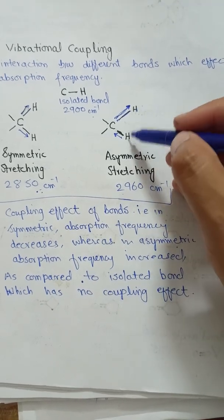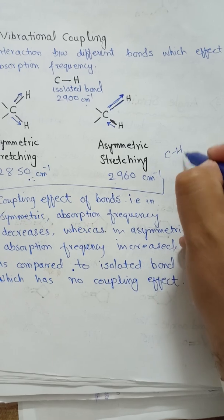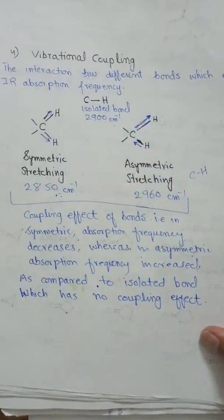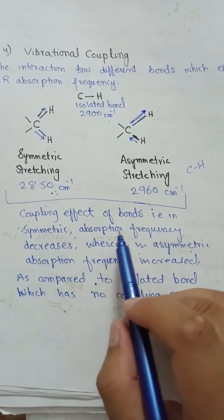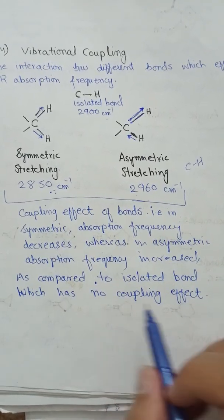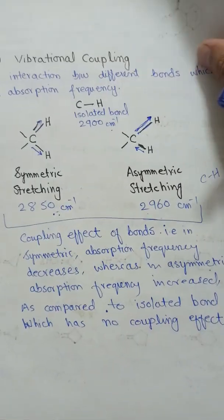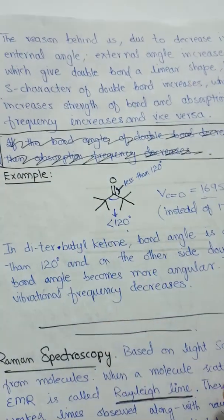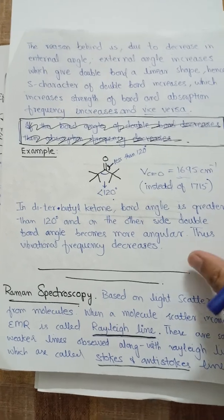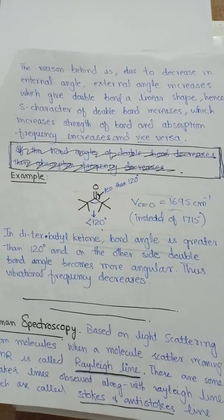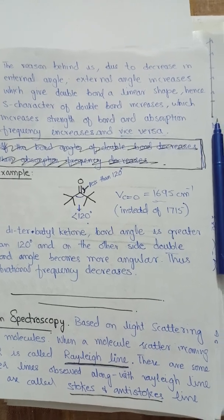These two bonds affect each other — this is called the coupling effect. In symmetric stretching, the coupling effect decreases the absorption frequency, whereas in asymmetric stretching, the absorption frequency increases compared to the isolated bond which has no coupling effect. These are the factors that affect IR absorption frequency. In our next lecture, we will study the IR absorption spectrum of different functional groups and their base absorption frequencies. Thanks for watching.